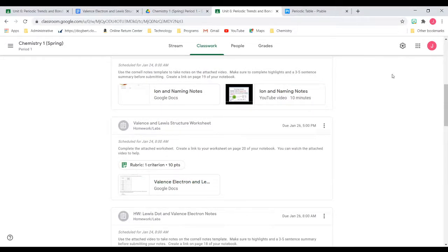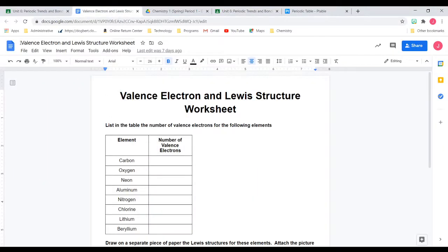You want to open this entire assignment so that it's big and you can see your copy on the right. You're going to open your copy. It should say up here at the top, your name in the valence electron and Lewis structure worksheet.